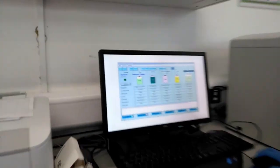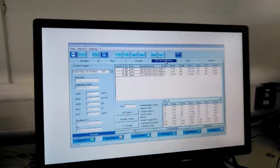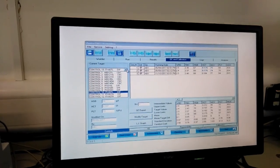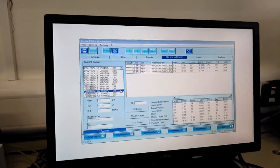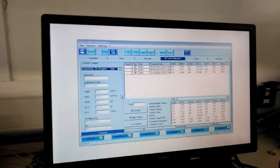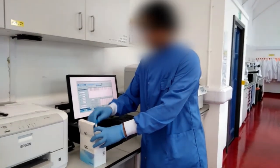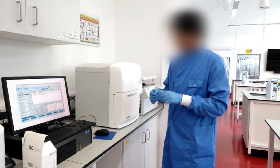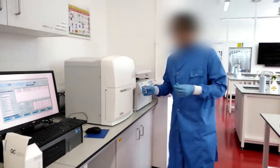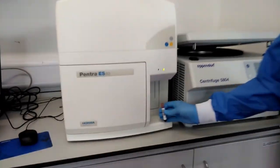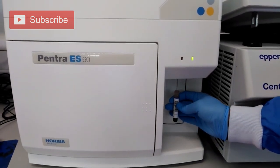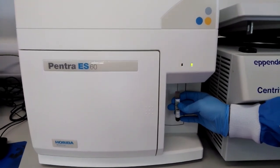To run the controls, click on QC and calibration. Then on the left side, from the drop down menu, choose the appropriate control. Once you have done it, take the control, mix it well, and place it under the probe. The probe will automatically suck the blood and then goes back.